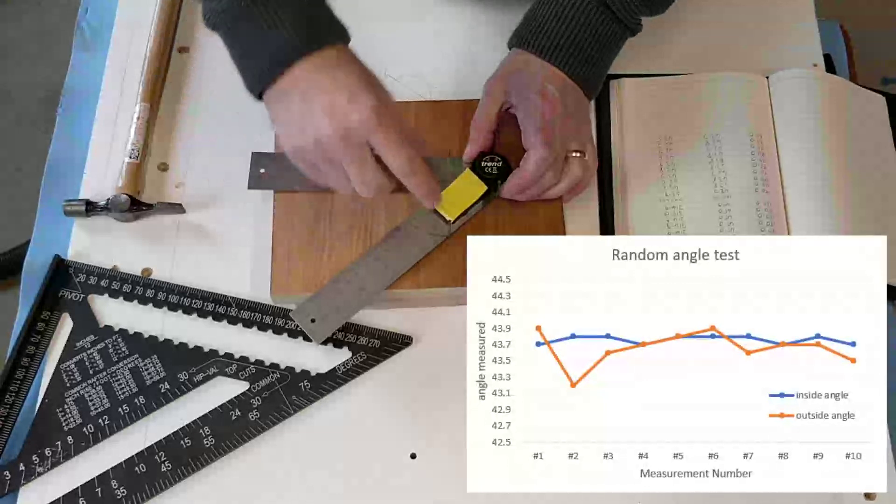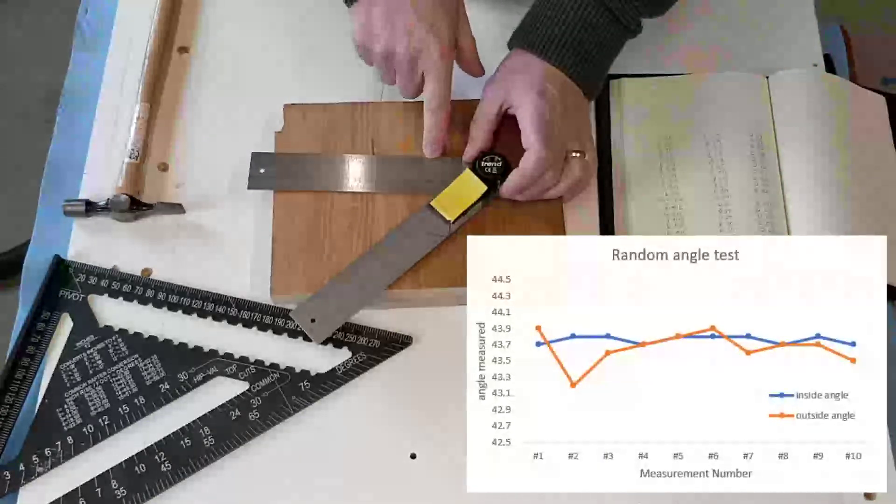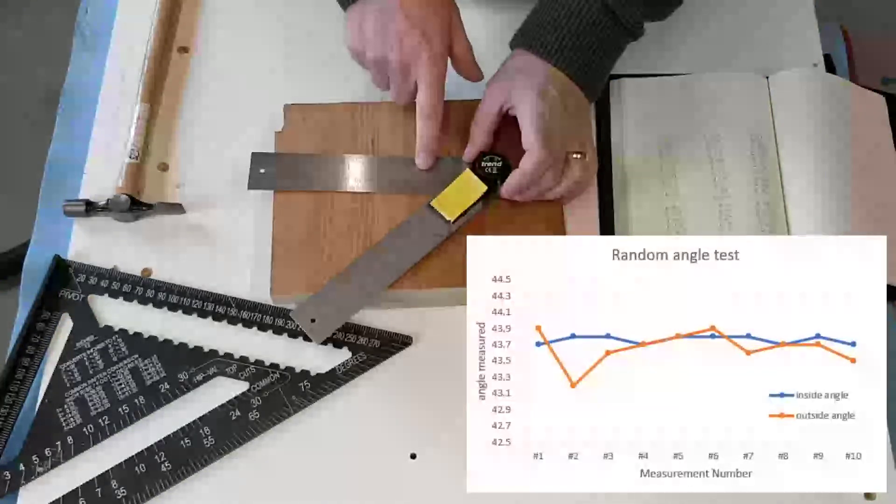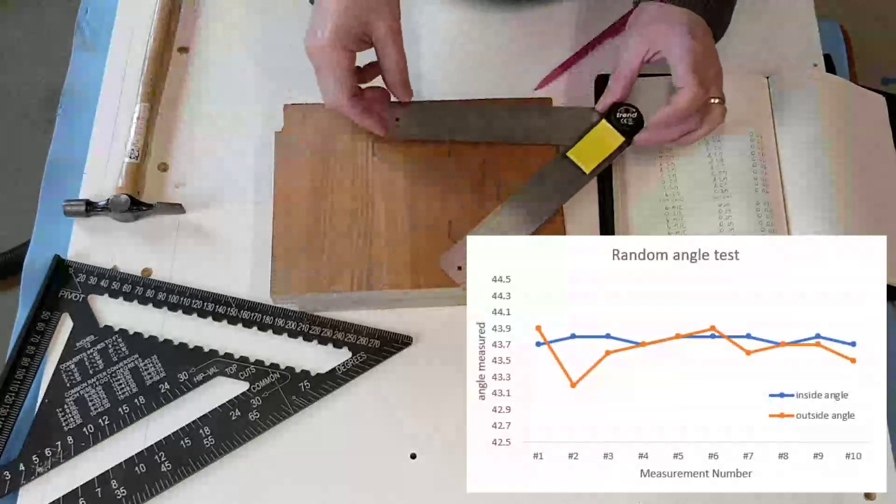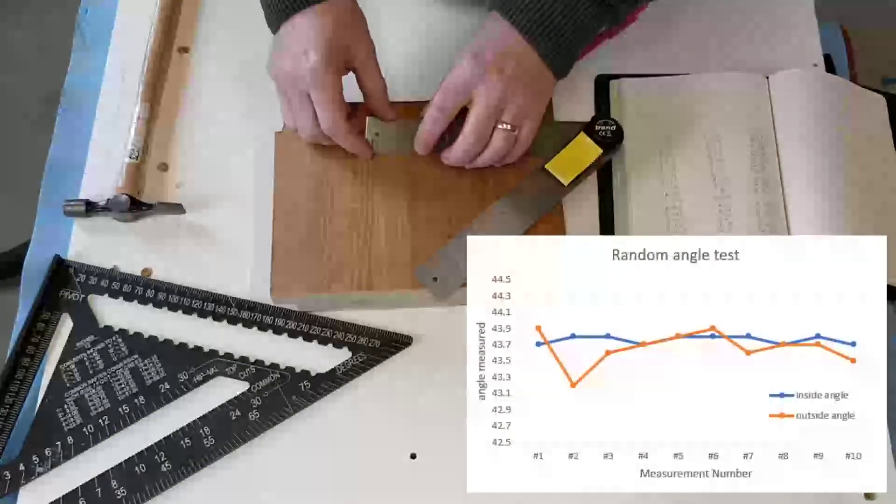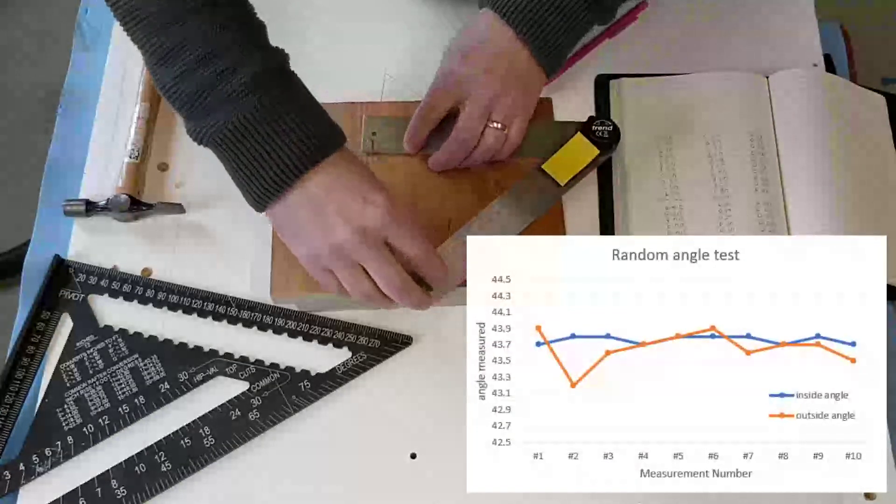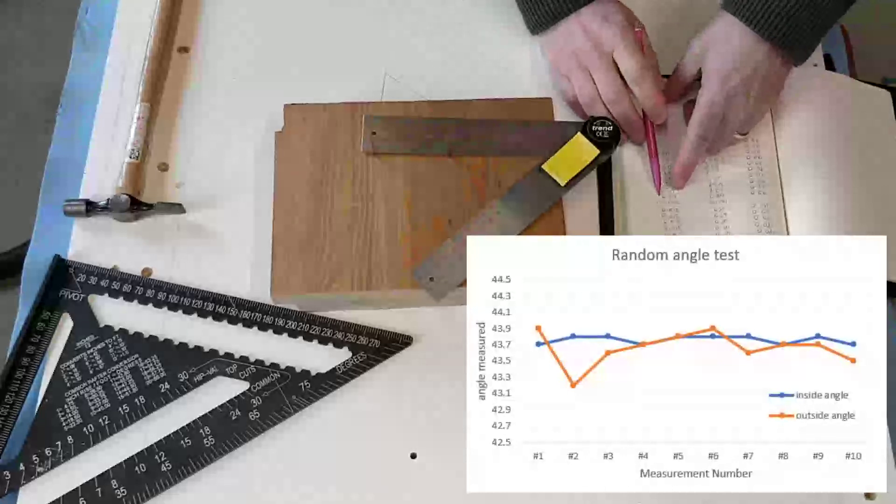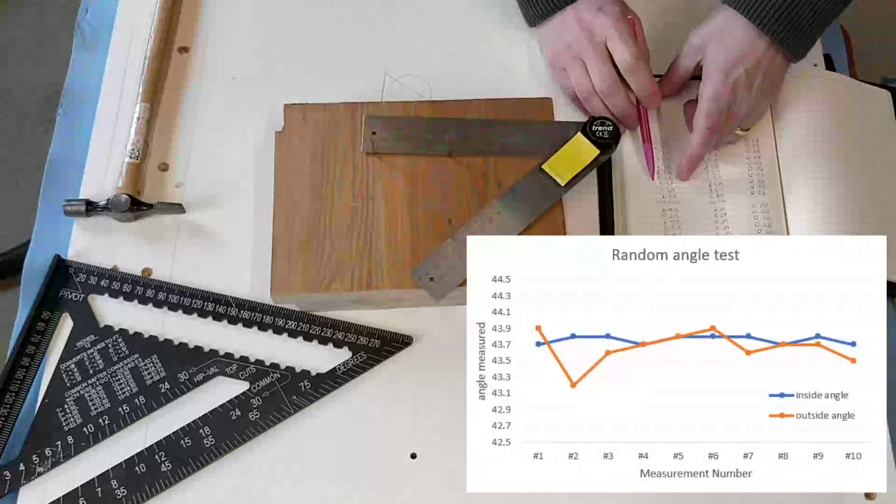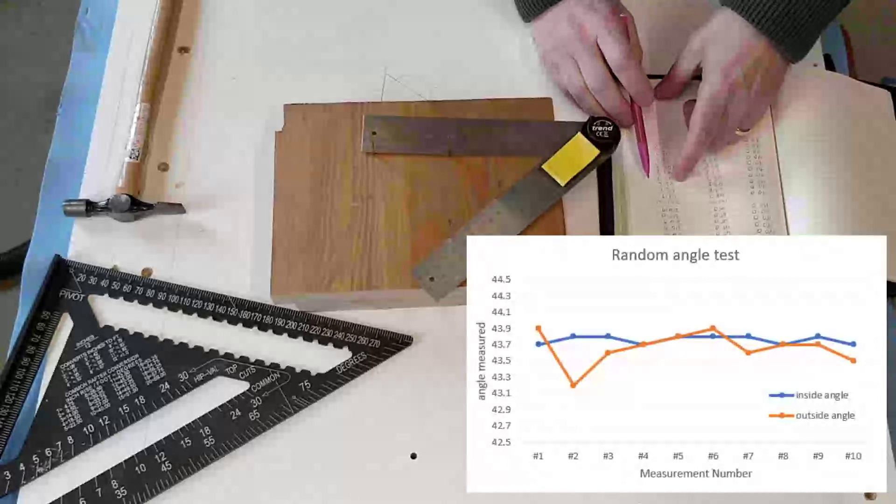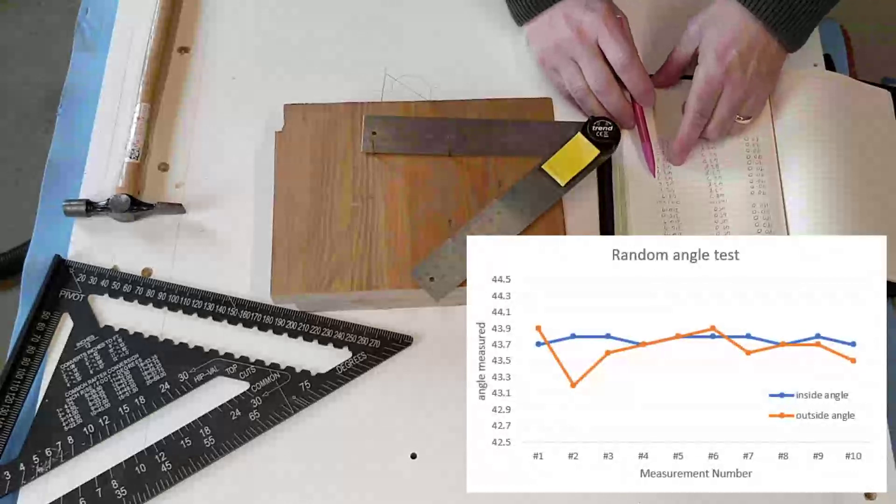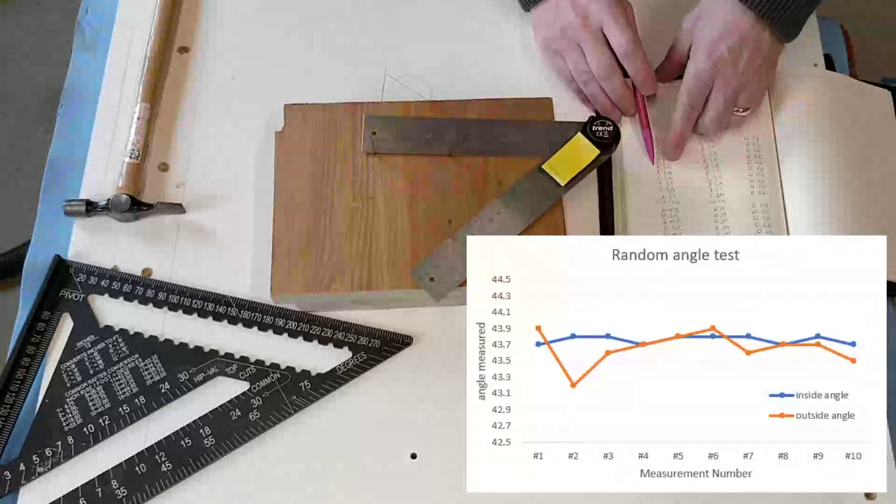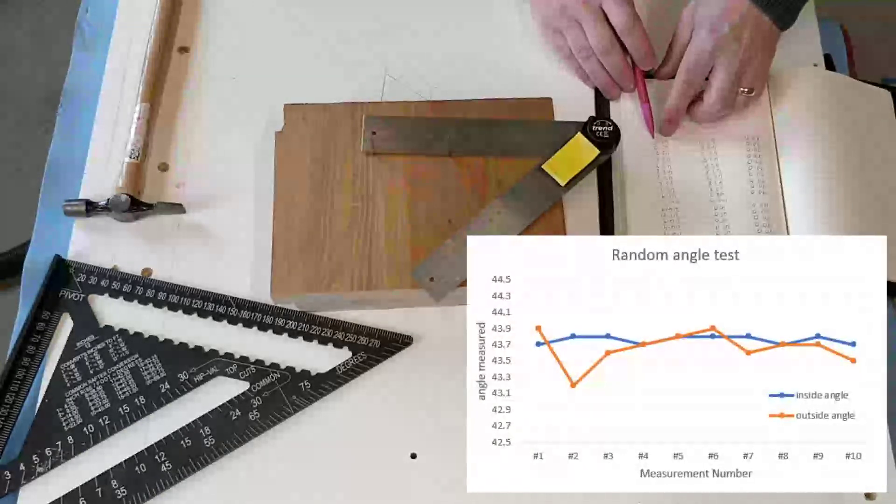On the inside I'm pretty consistent, either at 43.7 or 43.8 degrees. On the outside it's a little bit harder to measure, and I started off with 43.9, then 43.2, then 43.6. After some time it looks like I got more consistent results, but they were still wavering a bit.